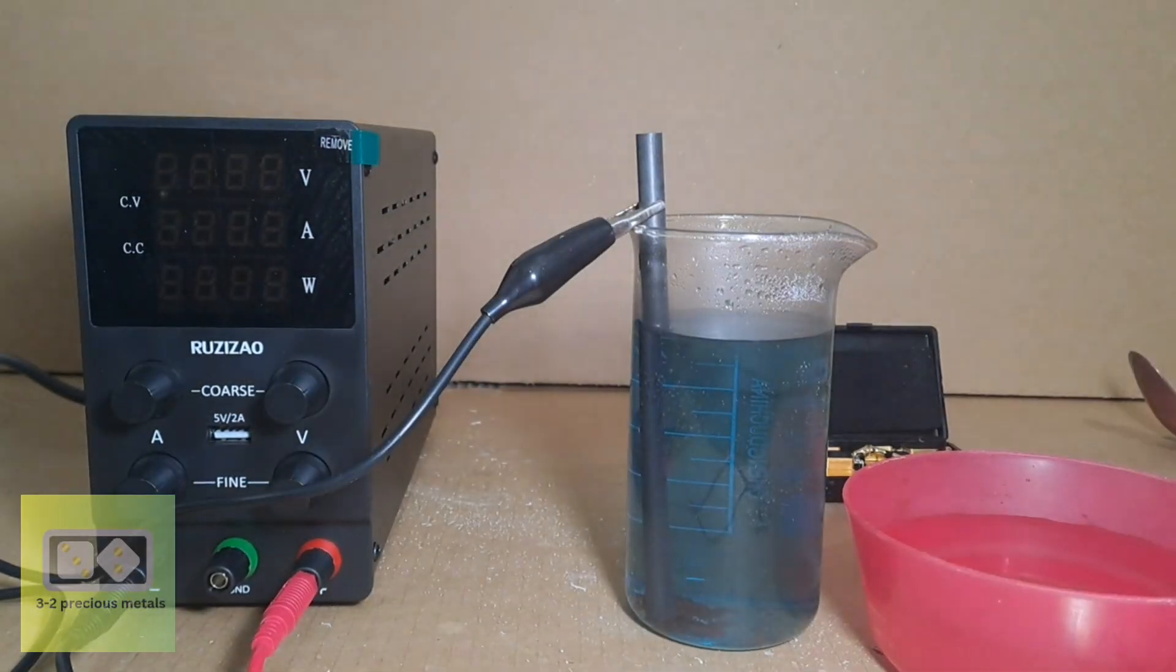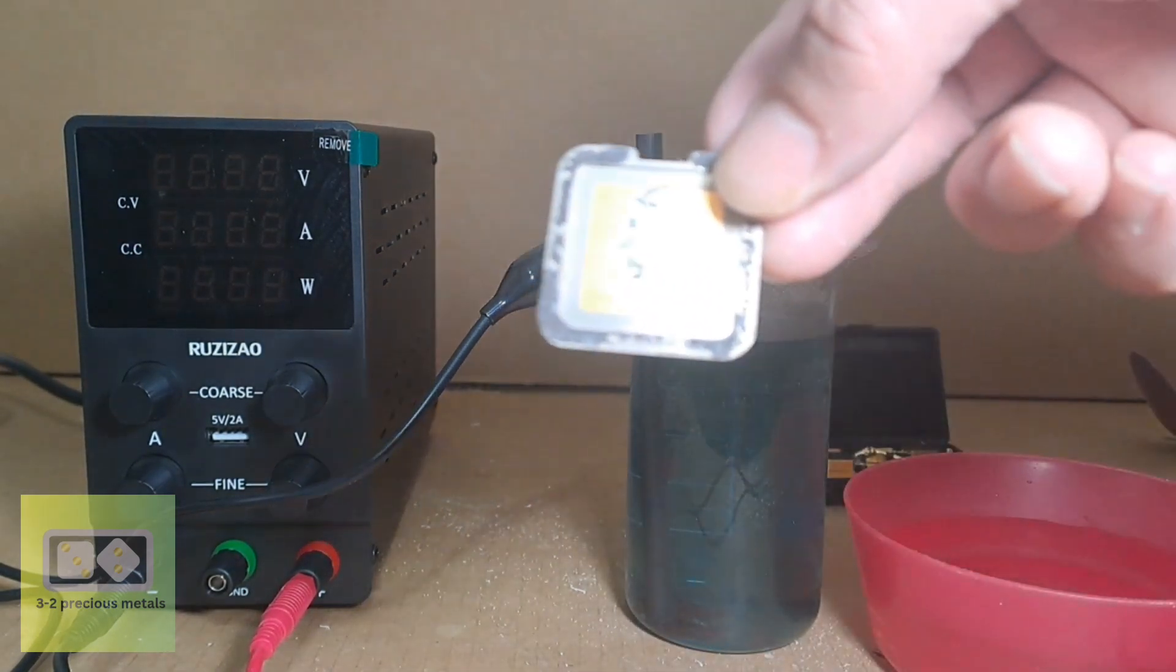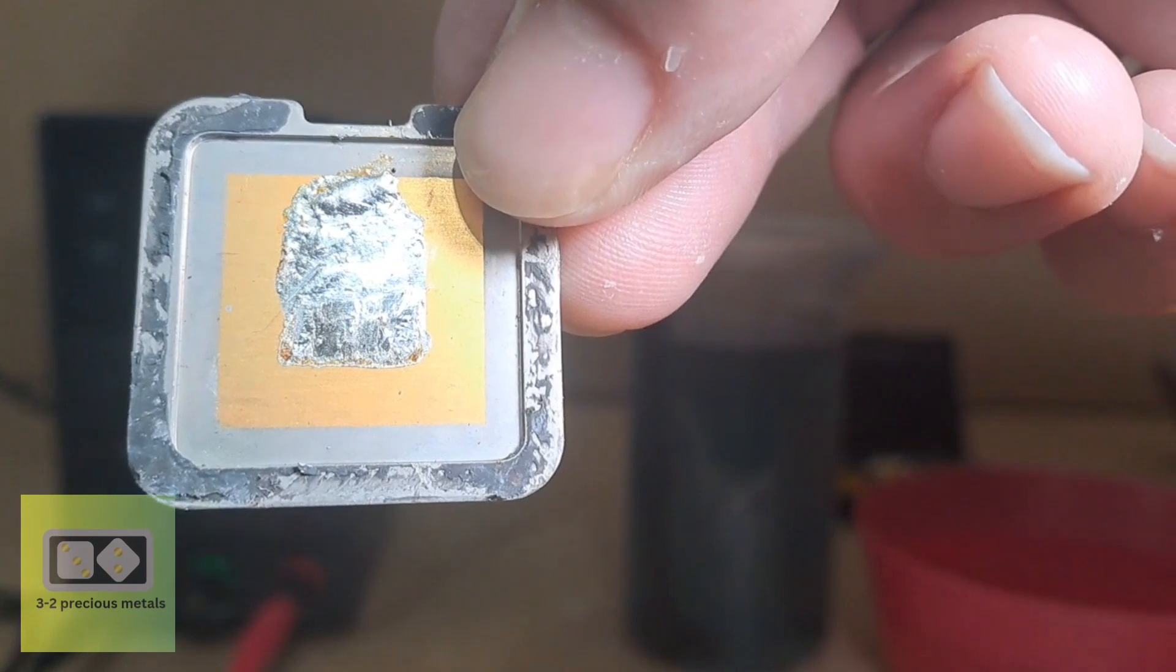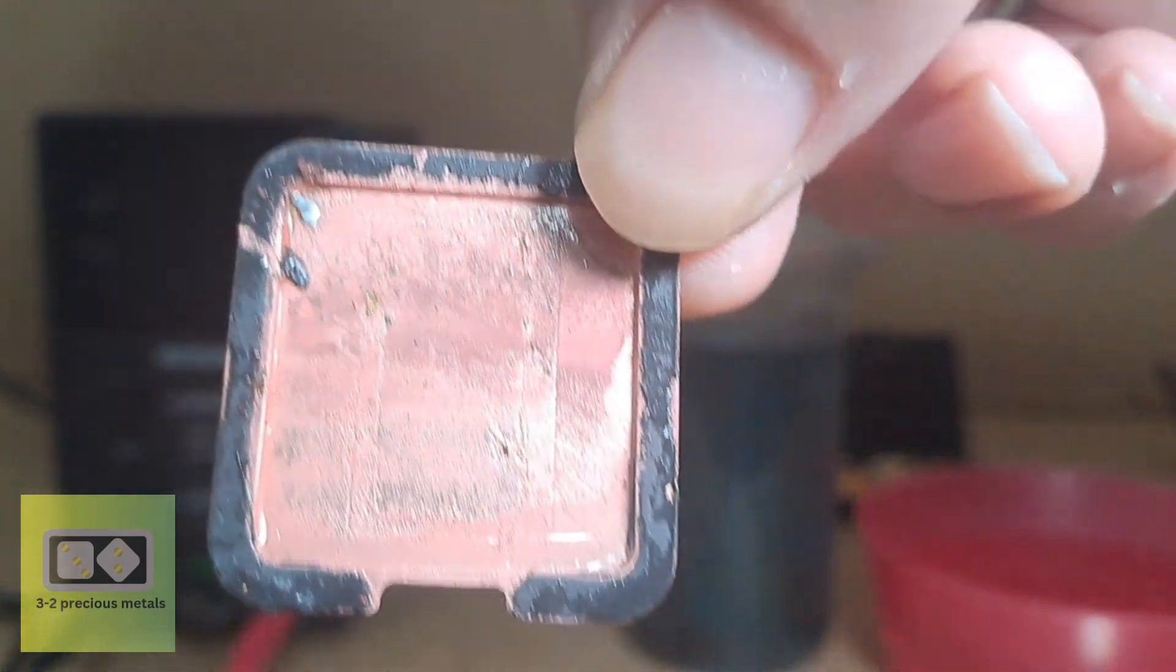Hello guys and welcome to a new video. In this video we're asking the question: can reverse electroplating be done with sodium bisulfate instead of sulfuric acid? And the short answer is yes it can.